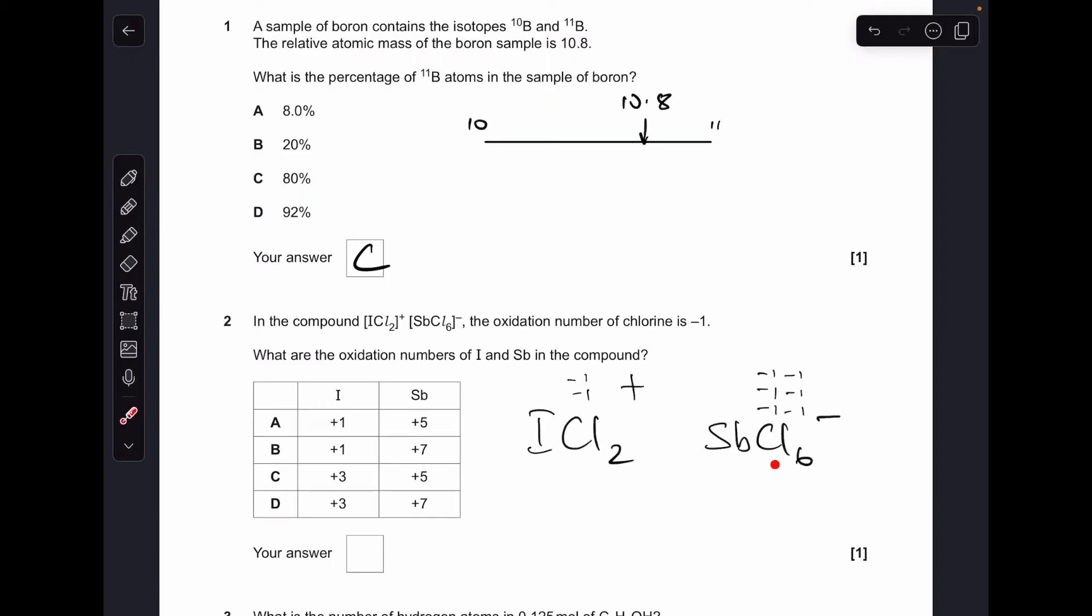Moving on to number 2, so there's the two ions there. So the oxidation number for chlorine, we're told, is minus 1. So there's two of them in this one, so combined is minus 2. So to get a positive charge, we need a plus 3 from the iodine. So therefore, that means that we're left with D and C as options. So moving on to the second one. So we've got 6 chlorines, each one minus 1. So to get that overall minus 1 charge, we're going to need plus 5 from the antimony. So C was the answer.